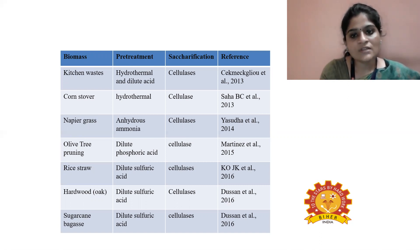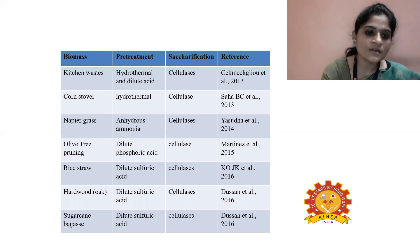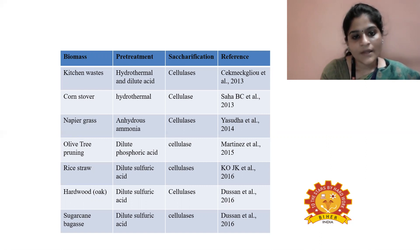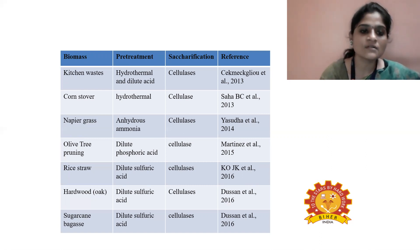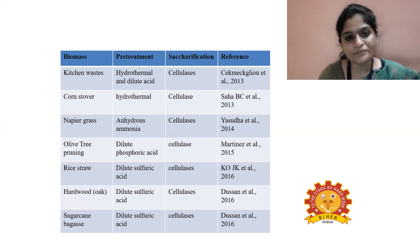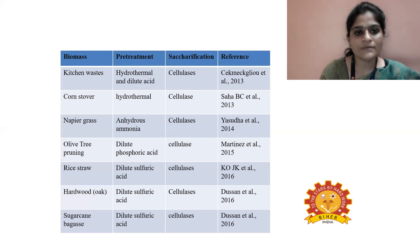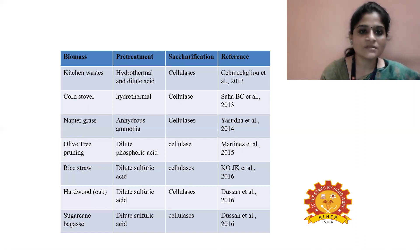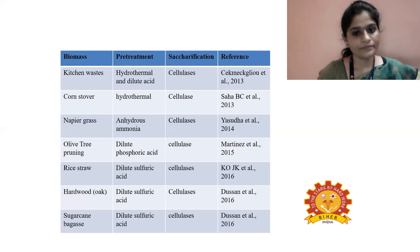Rice straw is commonly used at the industrial level for the saccharification process in bioethanol production. Apart from rice straw, sugarcane bagasse is another commonly used biomass. Biomass sources include agricultural waste, medical waste, biological stream waste such as kitchen waste, and fruits and vegetable waste generated in local markets.